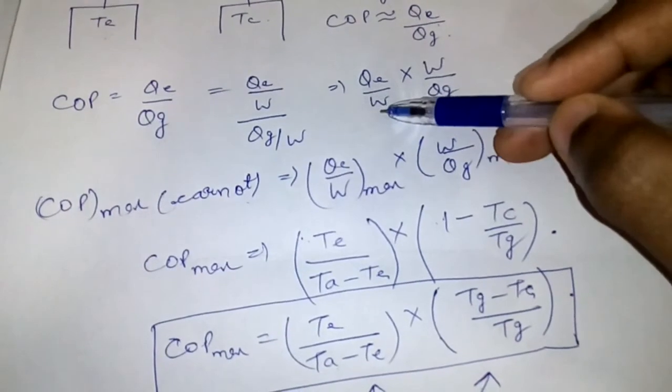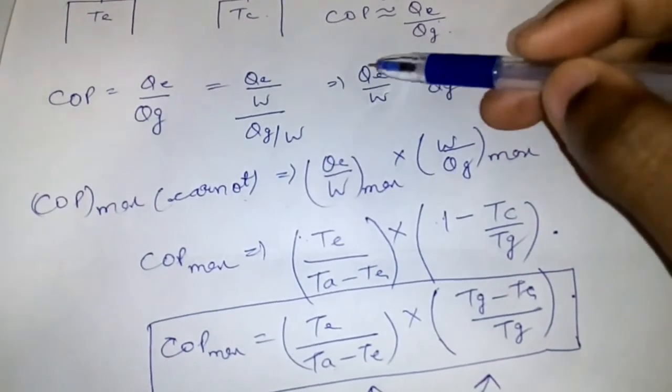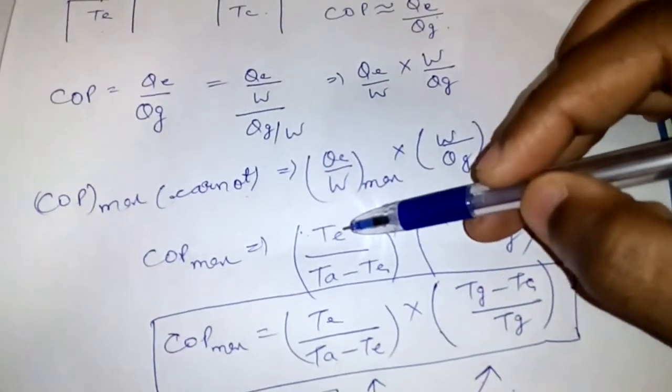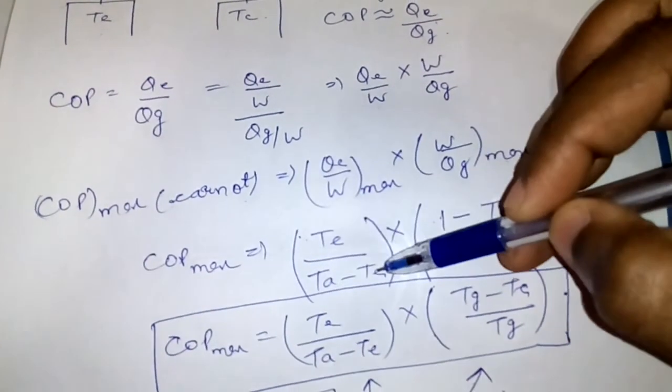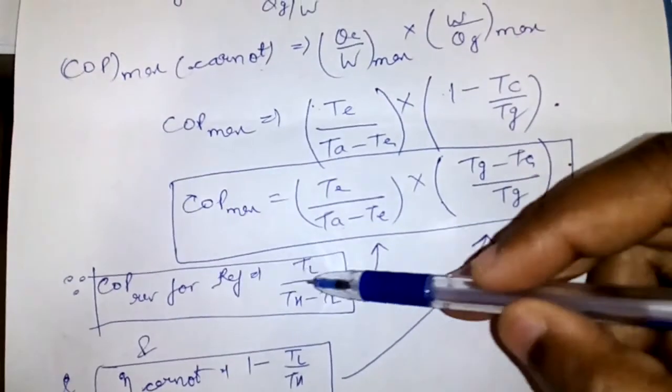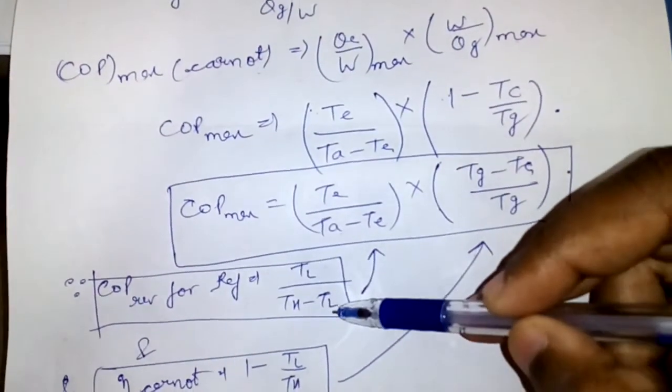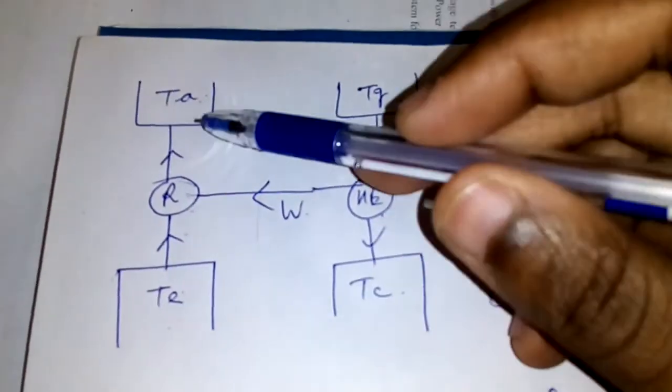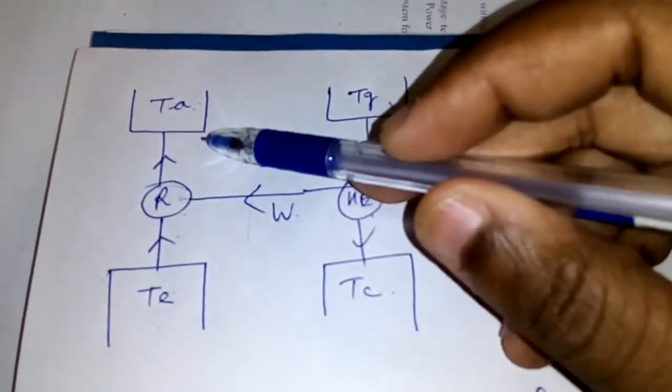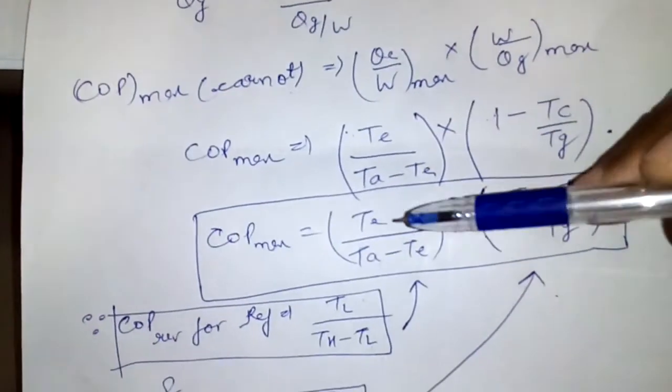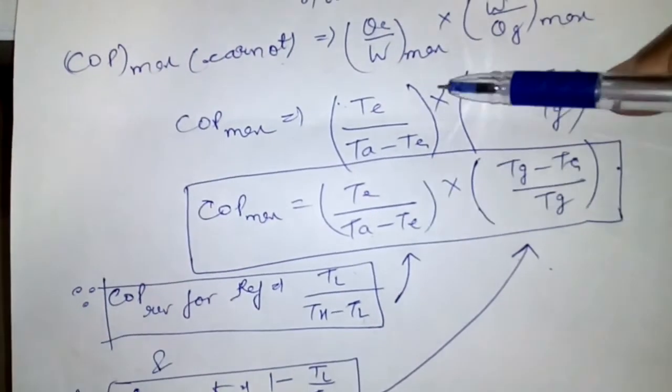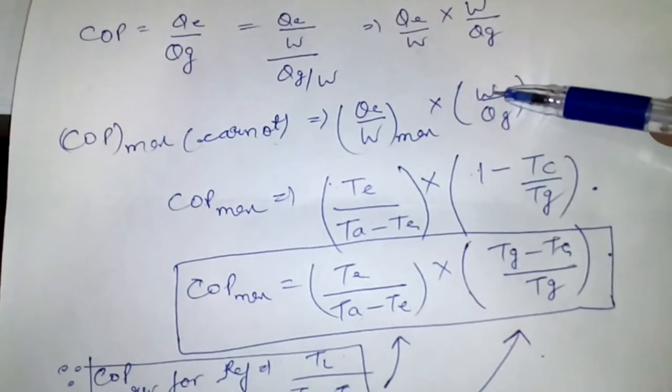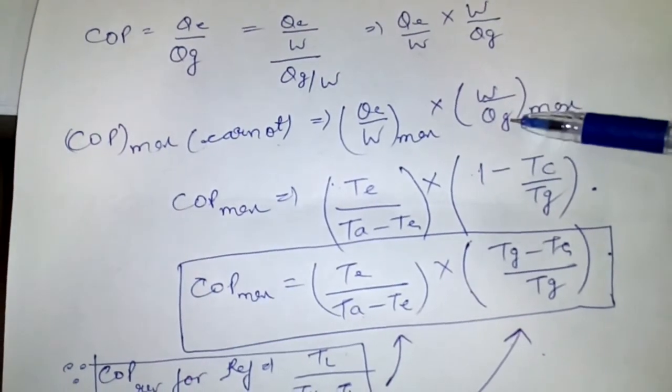Now QE by W, this is COP of a refrigerator, so it can be written as TE upon TA minus TE. COP of a refrigerator is TE upon TA minus TE.